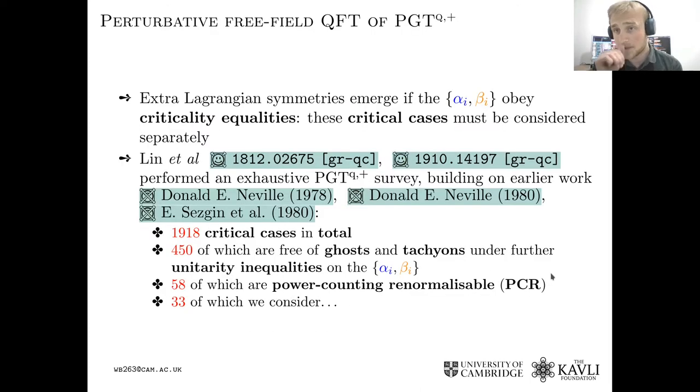So if you want to examine the quantum field theory of the Poincaré gauge theory, you'd want to invert the Lagrangian to find the propagator. In the linearized theory, that becomes impossible if the dimensionless coupling constants obey certain relations. So the Lagrangian becomes singular, you can't invert it. This gives rise to a critical case that has to be considered separately.